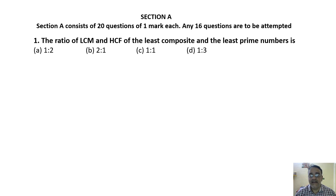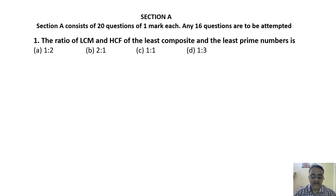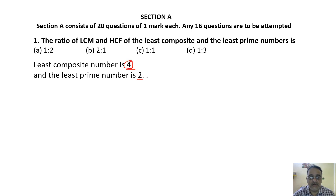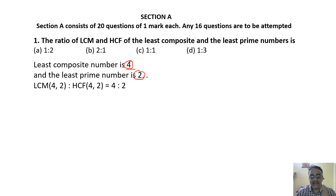Question 1: The ratio of LCM and HCF of the least composite and the least prime number. The least composite number is 4 and the least prime number is 2. The HCF of 4 and 2 is 2, and the LCM of 4 and 2 is 4. So the ratio of LCM to HCF is 4:2, which simplifies to 2:1. The correct answer is option B.